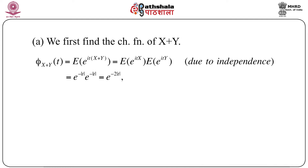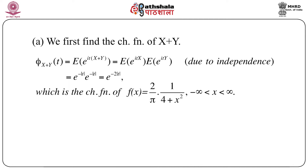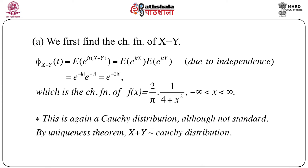This simplifies to e^{-2|t|}, which is the characteristic function of a Cauchy distribution — not standard but with scale parameter 2, corresponding to density (2/π)·1/(1+4x^2). By the uniqueness theorem, X+Y follows a Cauchy distribution.